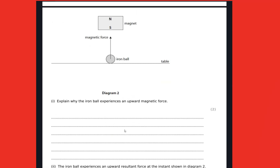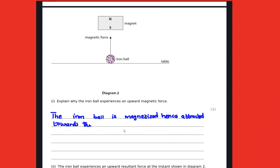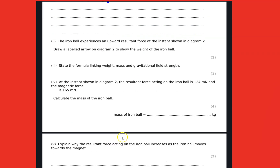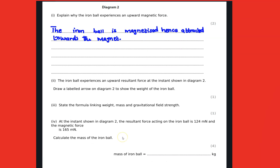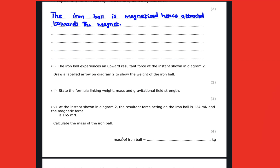The iron ball is magnetized and hence attracted towards the magnet. Draw an arrow on the diagram to show the direction of the weight.